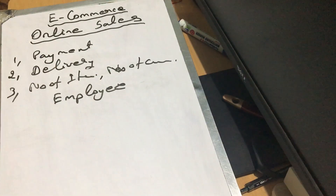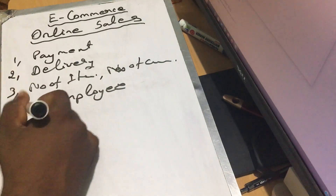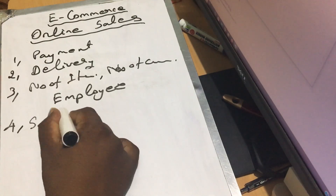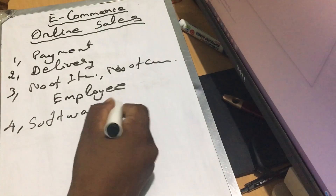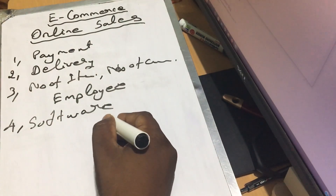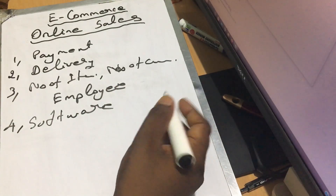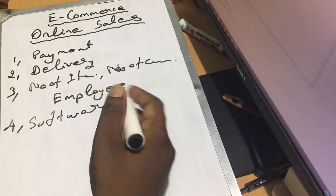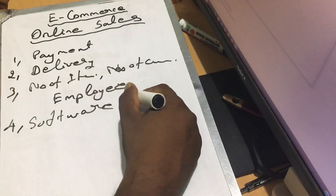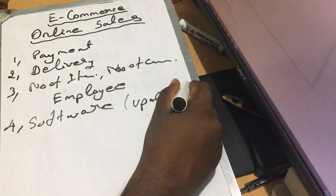If you want to develop software, use that as well. If you are doing software for online sales, you can develop it like this. You can add features based on customer feedback. You can update it at least every 6 months or 1 year.